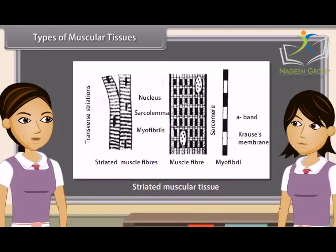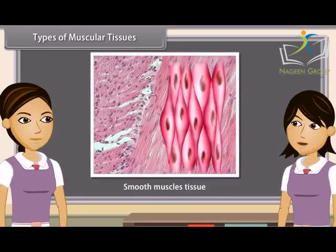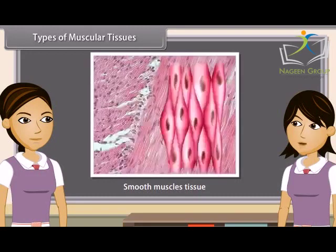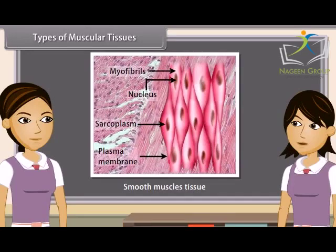Striated muscles are found in limbs, tongue, abdominal wall, pharynx and esophagus. They have alternate light and dark bands of striations; they are long, cylindrical, unbranched and multi-nucleated. These muscles move when we want them to, so they are called voluntary muscles. Smooth muscles are present in the wall of stomach, intestine, blood vessels, iris of eye and ureter. They are small-sized, uninucleated and spindle-shaped, generally arranged in layers, and are involuntary muscles as they cannot be started or stopped voluntarily.